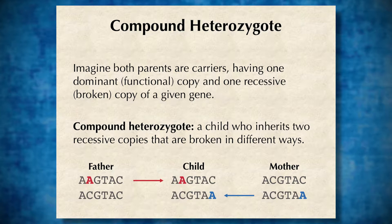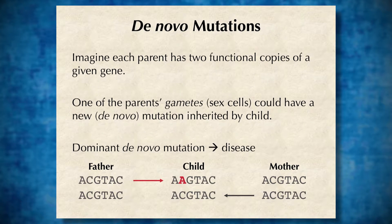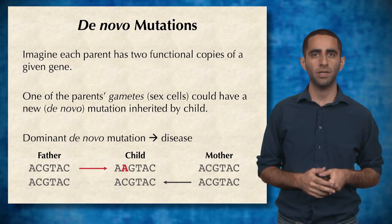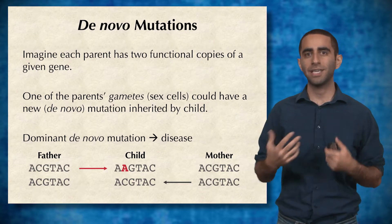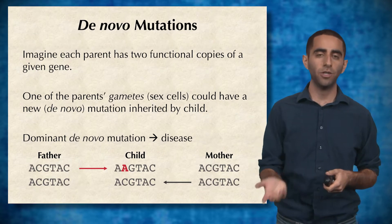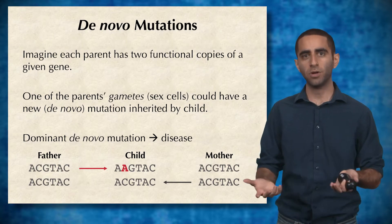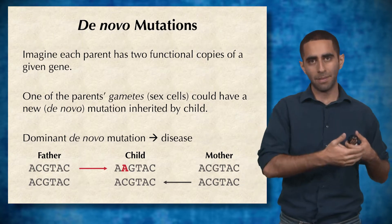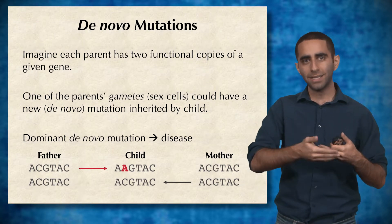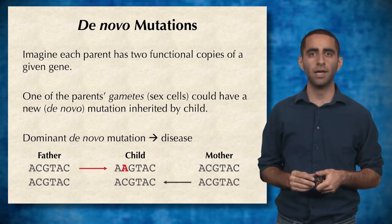So unlike the previous example in which both parents had a broken copy of the given gene, imagine a scenario where both parents actually have two functional copies of the given gene. However, one of the parent's gametes or sex cells has a new, or de novo, mutation. So then when the child is born, this gamete that gave rise to the child passes down this mutation to the child.